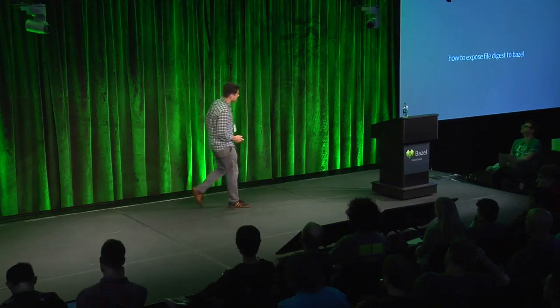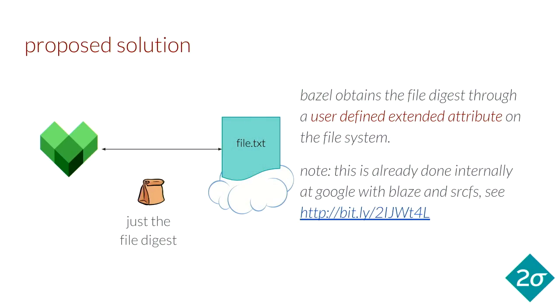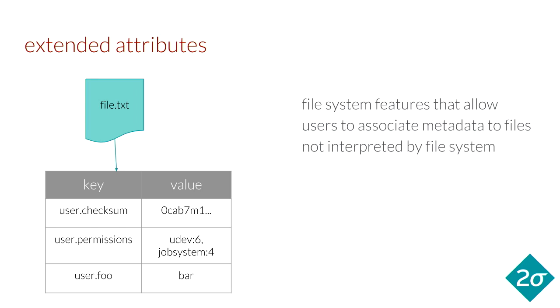One thing we thought was really important is to not just expose this file digest in an ad hoc manner — not just add some random API to our fuse — but do this in a standardized, ideally POSIX-compliant format. Our proposed solution is to expose this file digest via a user-defined extended attribute. Google actually does this internally with Blaze and SourceFS. An extended attribute is basically like a key-value store you can associate with an inode in a file system, allowing you to associate metadata that the file system doesn't actually interpret. POSIX access control lists are implemented via extended attributes on some file systems, for example.